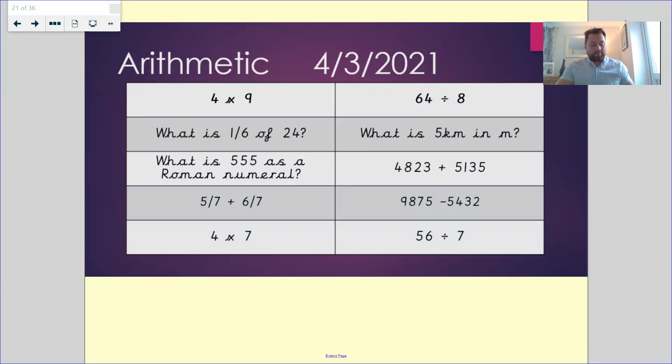4823 plus 5135 will give you 9958. And then the subtraction question 9875 take away 5432 is equal to 4443.